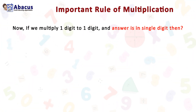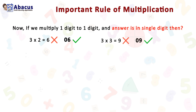Now, if we multiply one digit by one digit and the answer is a single digit, then we need a special rule. For example, three multiplied by two gives six — six is a single digit.